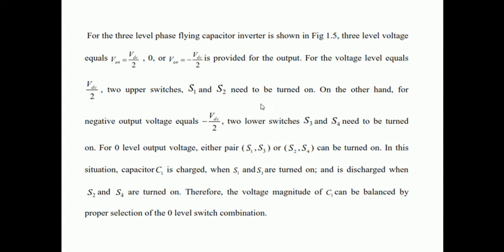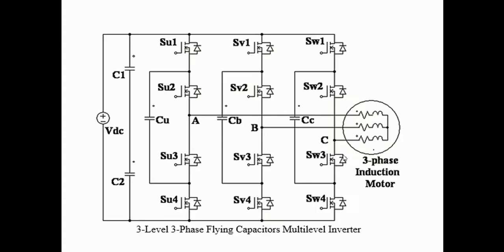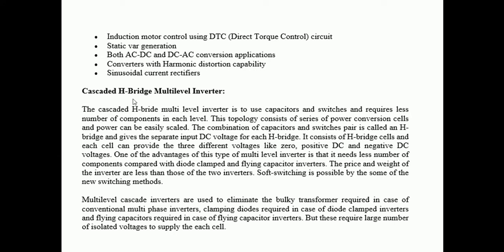This is the three-phase flying capacitor multilevel inverter. The single-phase version was shown previously, and for the three-phase version we have outputs for A-phase, B-phase, and C-phase — a three-phase supply. The applications include motor control using DTC (direct torque control), static VAR generation, and it is used in both AC-to-DC and AC-to-AC converter applications with reduced harmonic distortion and sinusoidal output.